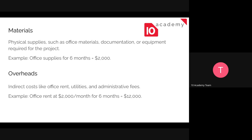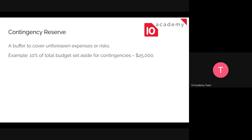Overheads are indirect costs like office rent, utilities, and administrative fees. For example, office rent covers renting the workspace, utilities cover electricity and Wi-Fi, and administrative fees are also included. If we rent an office at two thousand dollars per month for six months, we need a budget of twelve thousand dollars for overheads.